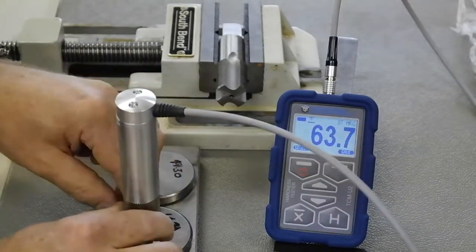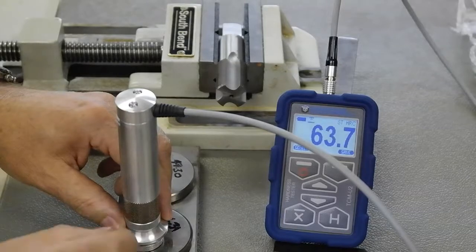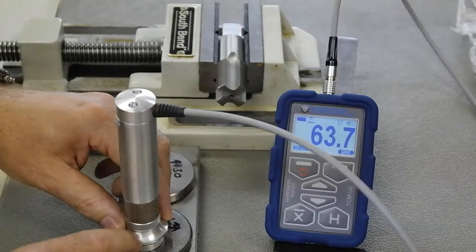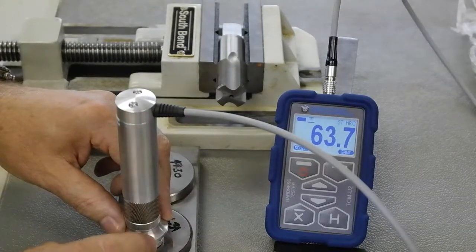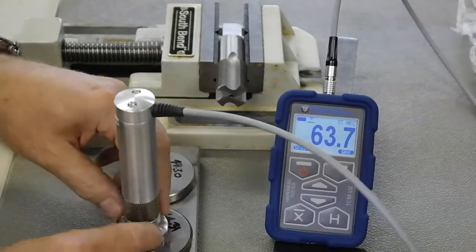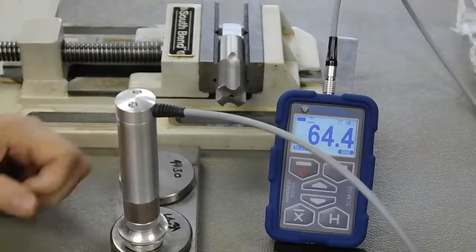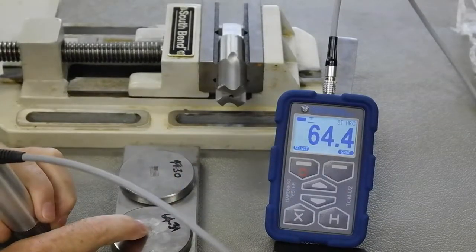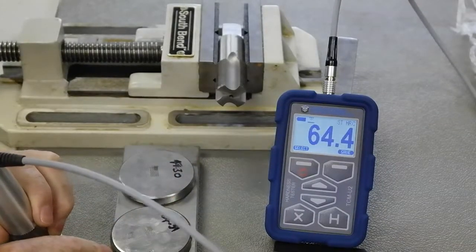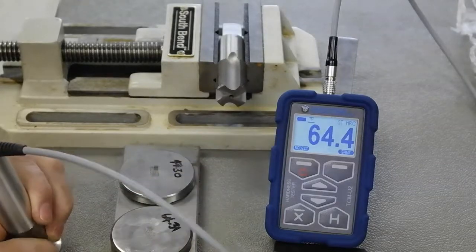63.7. I've got the device set up now so that every test that I do is the actual result. I can also set it up to do averaging. So if you do three tests it's going to give you the average of those three tests and give you an even more accurate result. So you can see here the test block is 64.3. Its tolerance is plus or minus 0.5. We're right on the money.